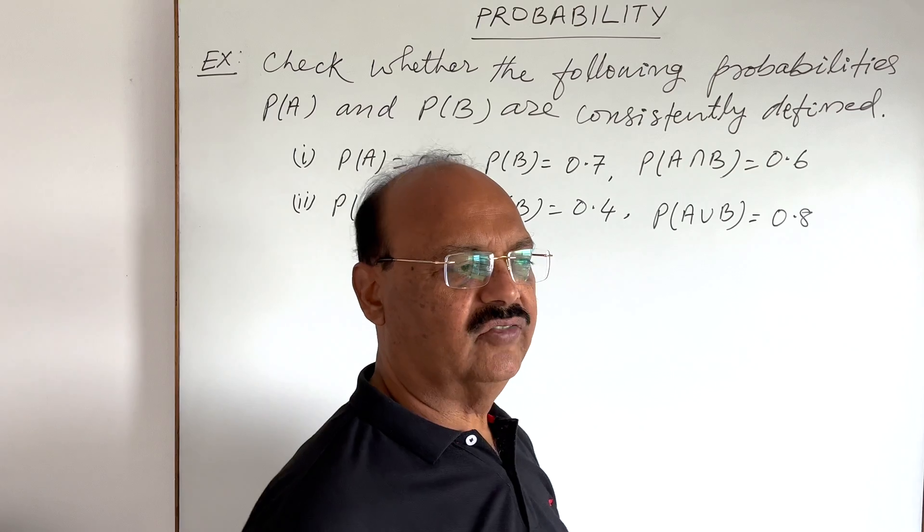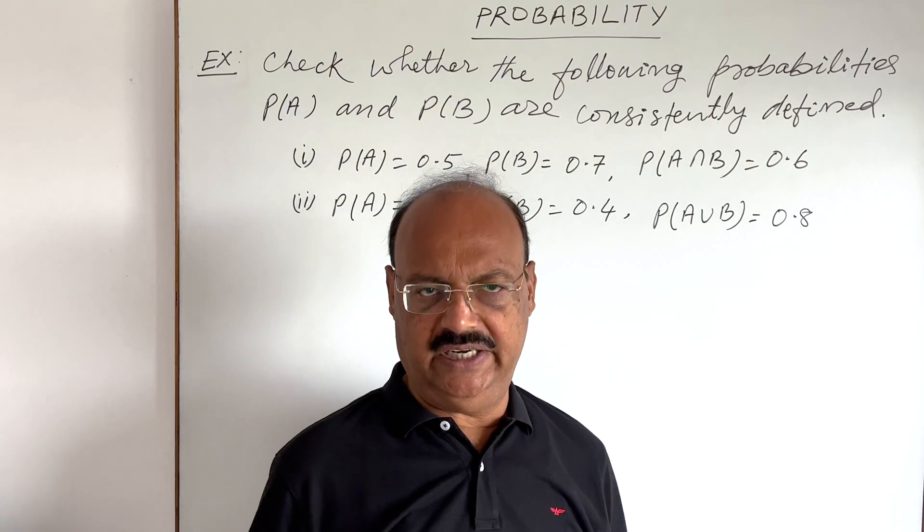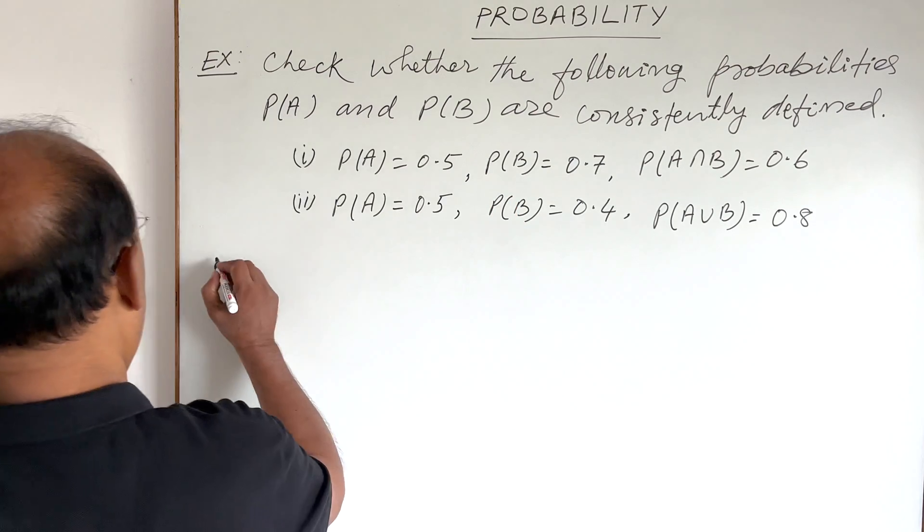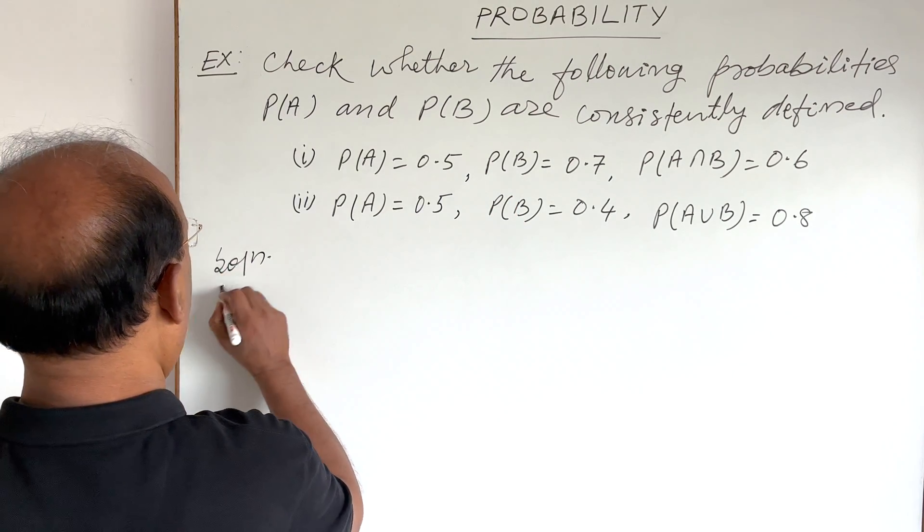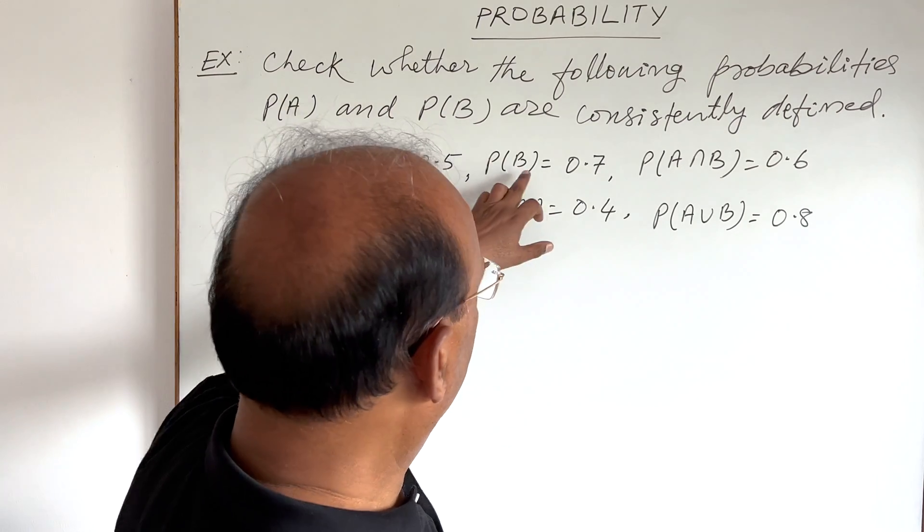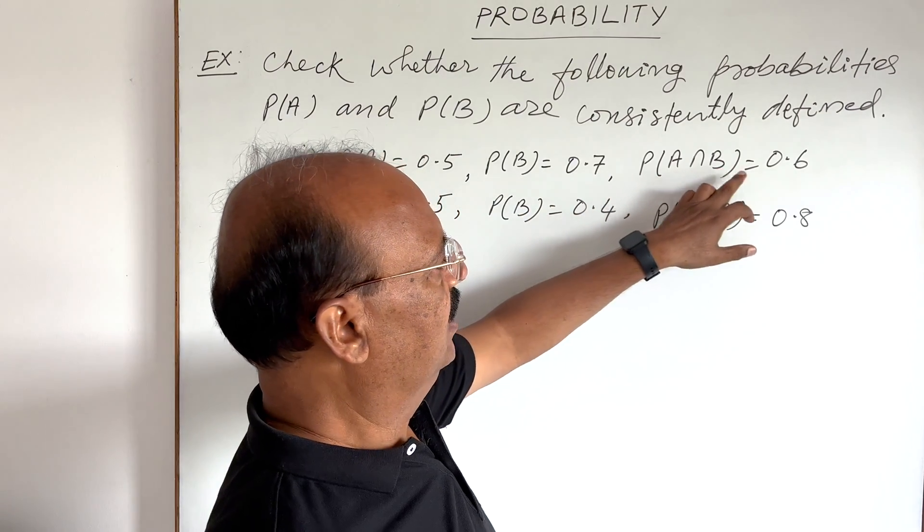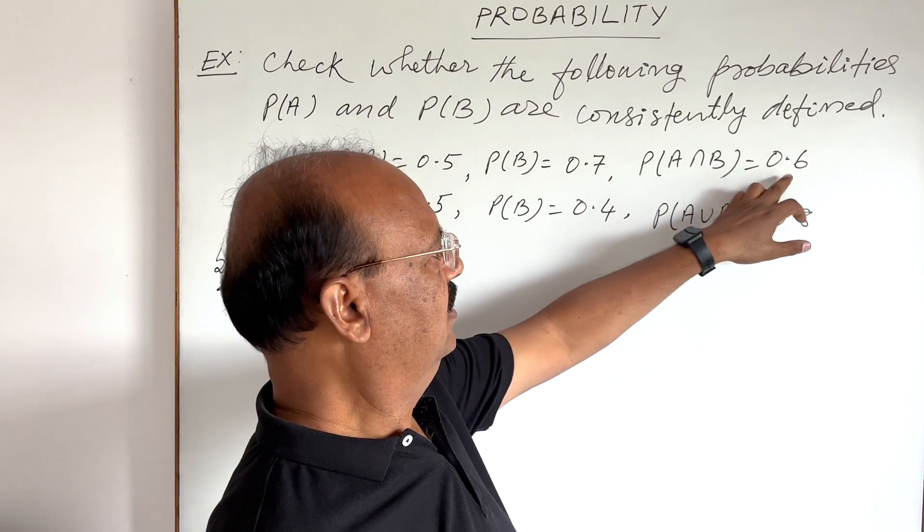So, we must know that what is the condition for consistently defined of this probability P(A) and P(B). Let us see first case here. Here, P(A) 0.5, P(B) 0.7 and P(A intersection B) is equal to 0.6.